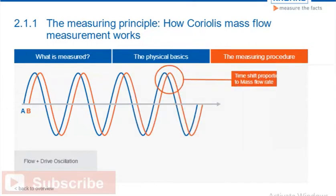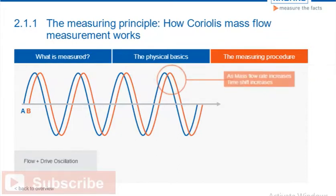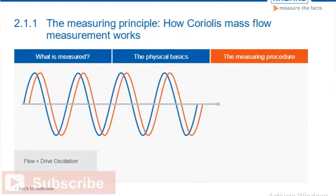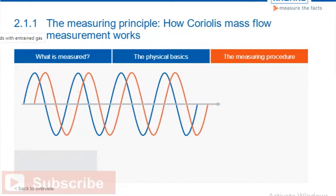Therefore, as the mass flow rate increases, so the time shift increases. The Coriolis mass flow meter, due to the symmetrical design, performs equally well with reverse flow, and is therefore a truly bidirectional instrument.